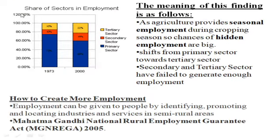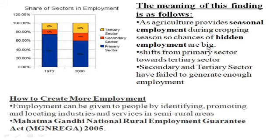Regarding the share of sectors in employment: the tertiary sector gives a much better share in GDP, but it is still not providing that much employment. People are still mostly employed in the primary sector, and that is the reason behind less development in our country. A lot of people are working in agriculture, which is the scenario of seasonal employment or hidden employment — disguised unemployment. We need to make secondary and tertiary sectors better than the primary sector in terms of employment for better economic development.